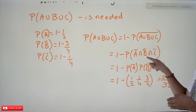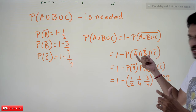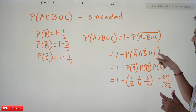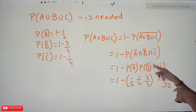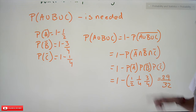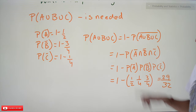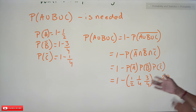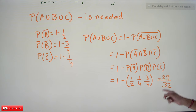Because these are independent events, probability of A complement intersection B complement intersection C complement can be written as probability of A complement multiplied by probability of B complement multiplied by probability of C complement. That is why we identified those complement values. Using the equation 1 minus this product, the probability that any one of them is going to solve the problem is 29/32.